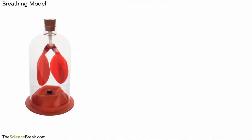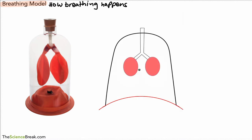Next, let's look at how breathing is actually achieved in the body. We're going to use a breathing model, which helps us understand how breathing happens. Here we have a piece of apparatus — you may have seen something like this before. We have a photograph of the apparatus and a diagram, and we're going to label the different parts and see how they relate to actual parts in the body.